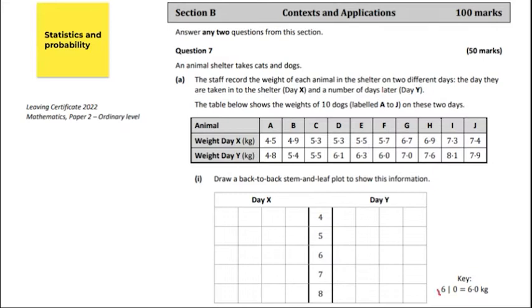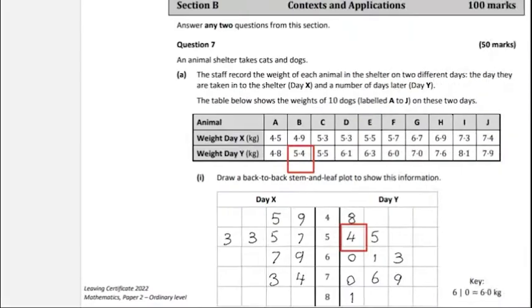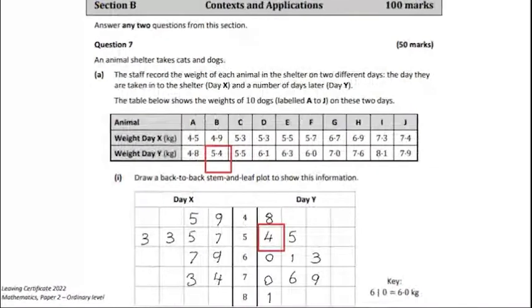So the 6 refers to the whole number like the 7 here, and then the point 7 would go on the other side, which would be over here. So for instance we'd have 6 and then 7 over here. So the key is very important. Let's fill in all these values and you can see that we're going to get this distribution on the left hand side for the X set and on the right hand side for the Y set.